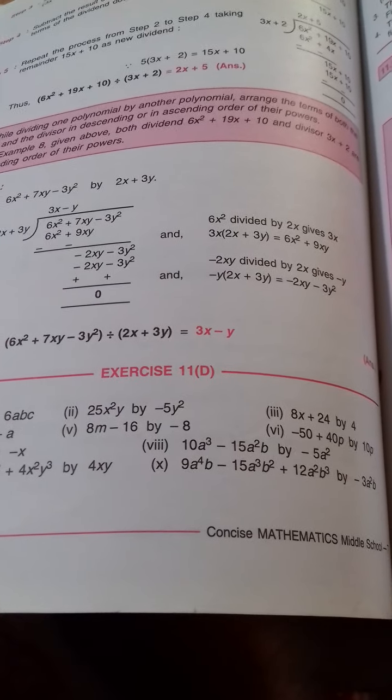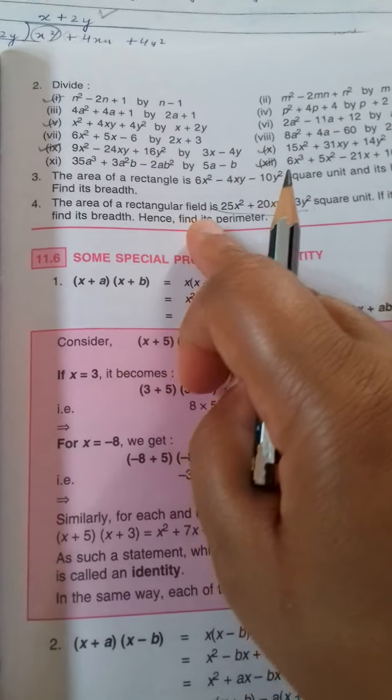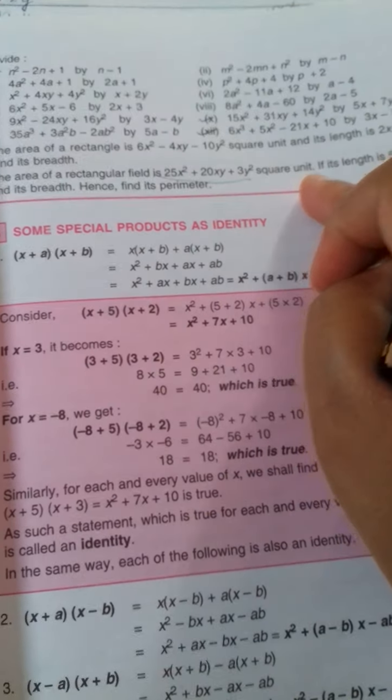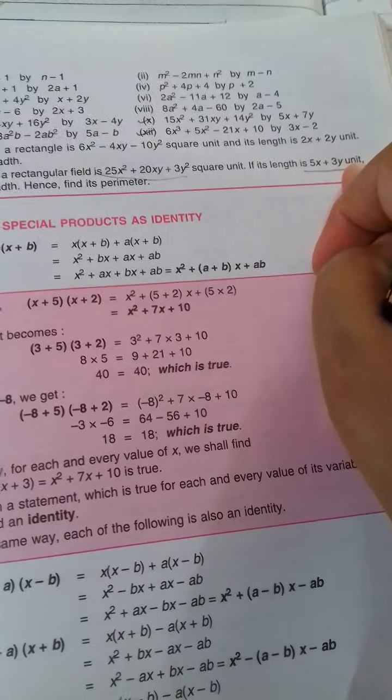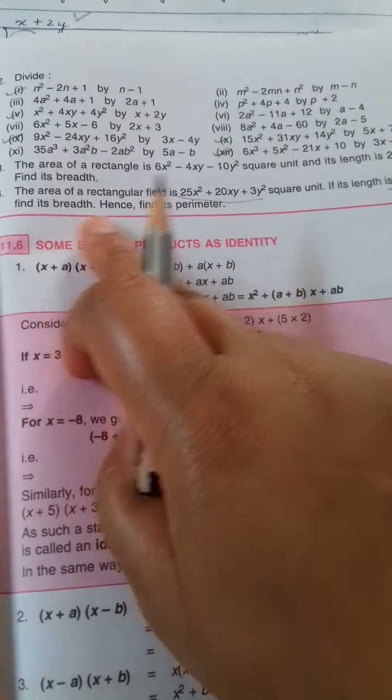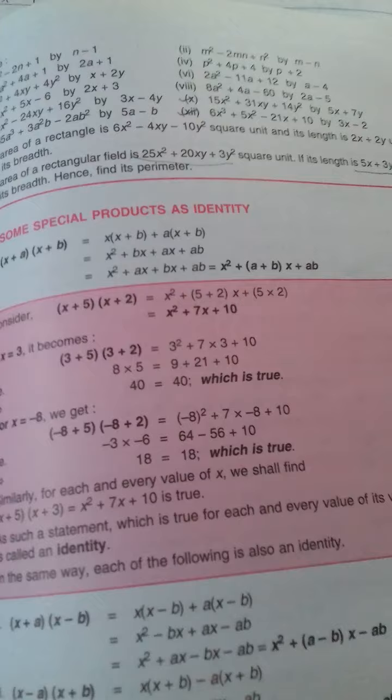Class 7th, we are doing exercise 11D and now we will do question number 4. The area of a rectangular field is this square unit. If its length is this unit, find its breadth, hence find its perimeter.